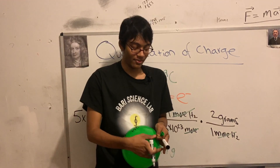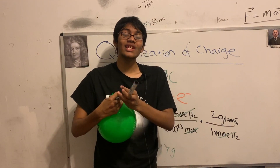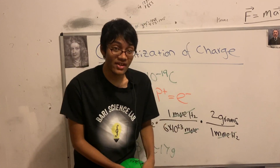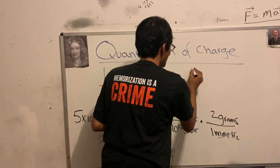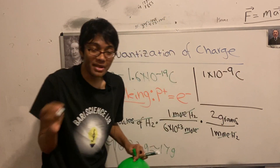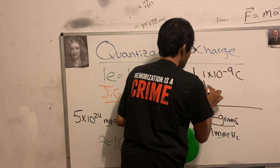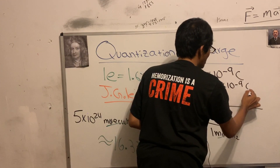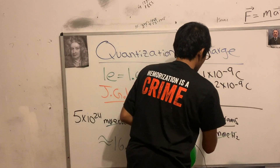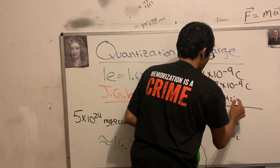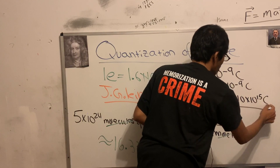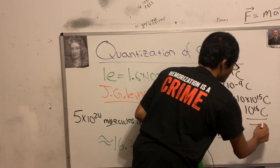King assumed that if each hydrogen molecule had a proton and an electron, and the proton's charge differed from the electron's charge by one in a billion, then each hydrogen molecule would have a net charge of 2 times 10 to the negative 9 coulombs. So the whole balloon of hydrogen molecules — 5 times 10 to the 24 molecules — would have a net charge of 10 to the 16 coulombs.